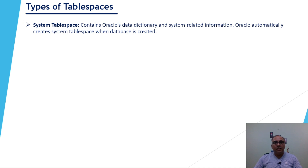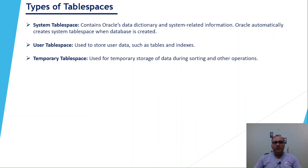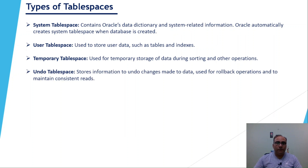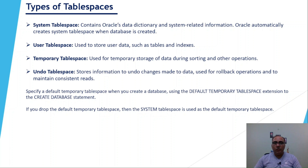Now let's talk about types of tablespaces. The system tablespace contains the Oracle data dictionary and system-related information; Oracle automatically creates it when the database is created. User tablespaces store user data such as tables and indexes and are normally created by the user. Temporary tablespaces are used for temporary storage, useful for sorting operations like ORDER BY. Undo tablespaces store information to undo changes made to data, and are useful for rollback operations. If no tablespace is assigned to a user or table, the system tablespace is used by default.